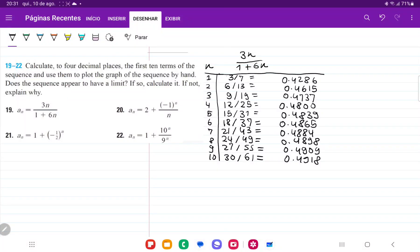So for number 19, we're taking the sequence here, an equals 3n over 1 plus 6n, and it's asking us to calculate to four decimal places the first 10 terms of the sequence.